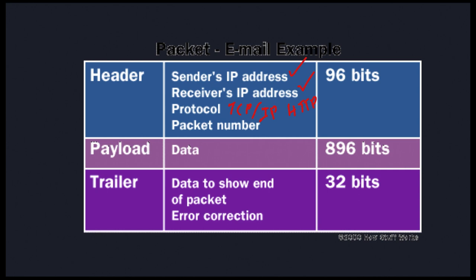The first part of the data packet is the header. The next part is the payload — the data — which is actually a piece of that photograph or email; it's the actual data you want to send. The header is like instructions on what to do, the data is the actual content. The trailer shows that we've reached the end of the packet and also contains data to help us figure out whether there was an error during transmission.